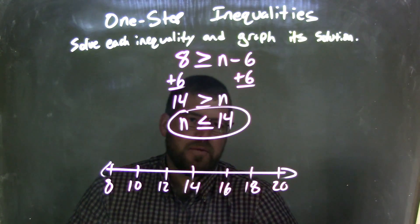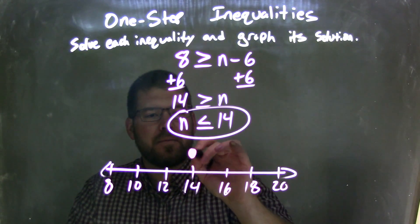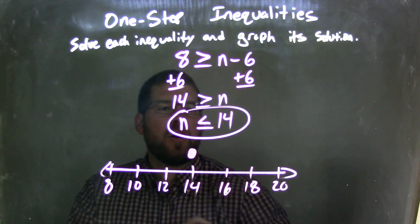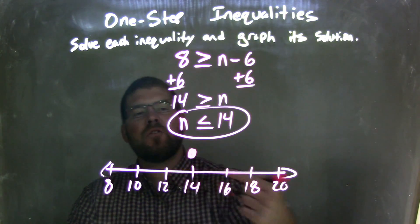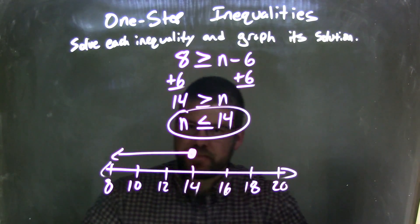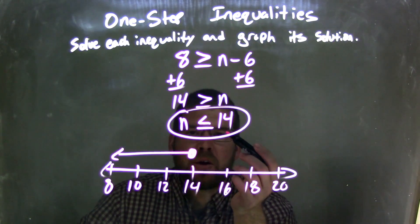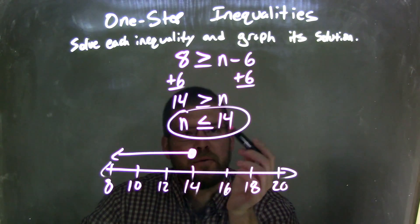So n is less than or equal to 14. We're going to put a closed circle at 14. And we're going to draw to the left, because it's less than. And there we have it. We have our graph that matches our inequality of n is less than or equal to 14.